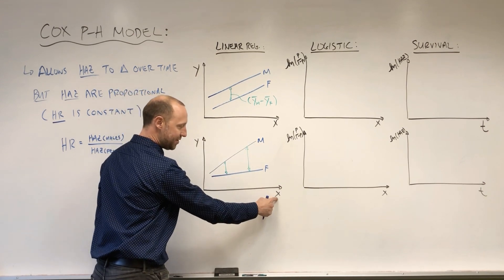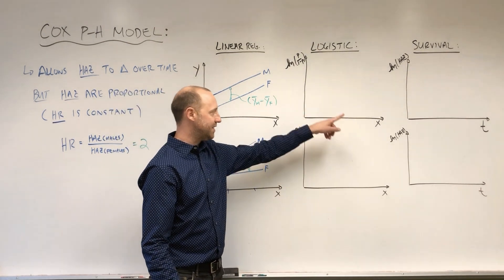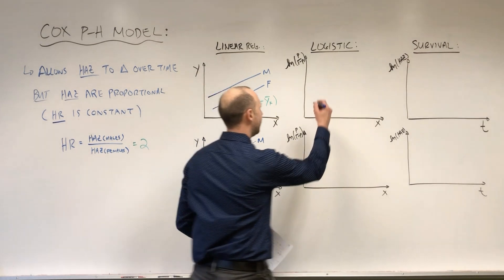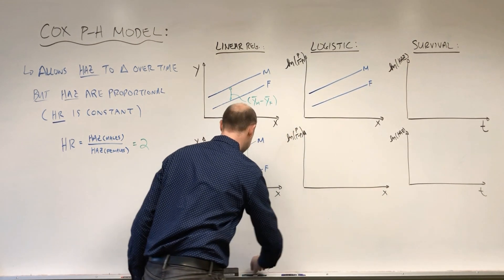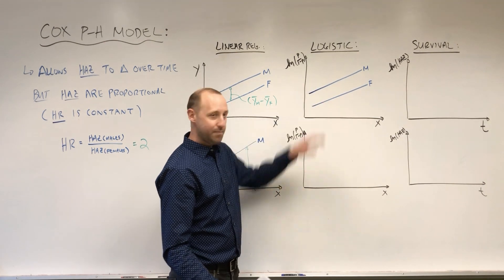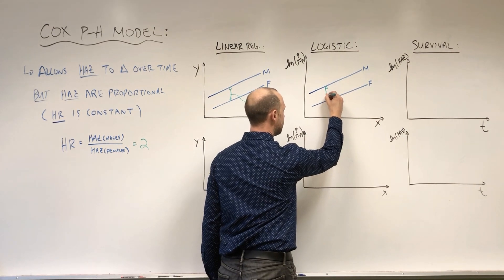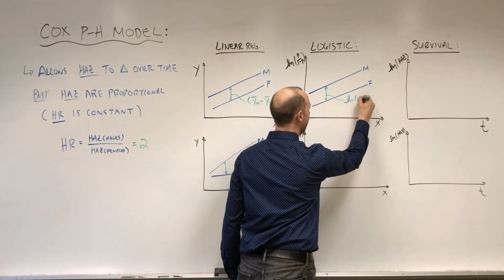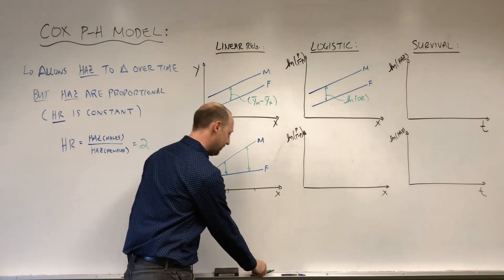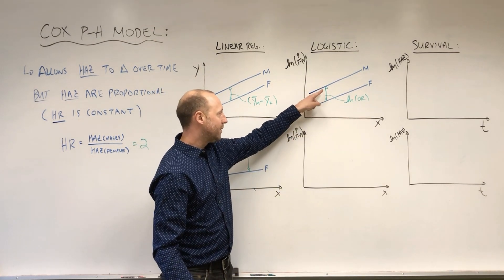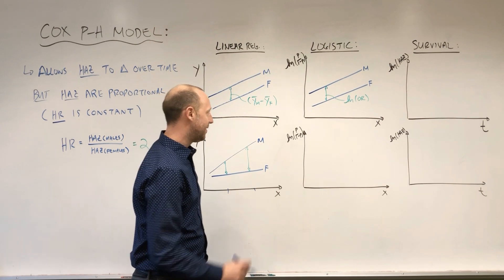In logistic regression we model the log odds of the disease as a linear function of x. Again, we can think of fitting a line for males and a line for females. By default we fit parallel lines — no interaction, no effect modification. The distance between these two is the log odds ratio; we take that difference and exponentiate it to get the odds ratio. This model assumes the odds ratio — the odds of disease for male versus female — is the same for any value of x, it does not depend on that x variable.